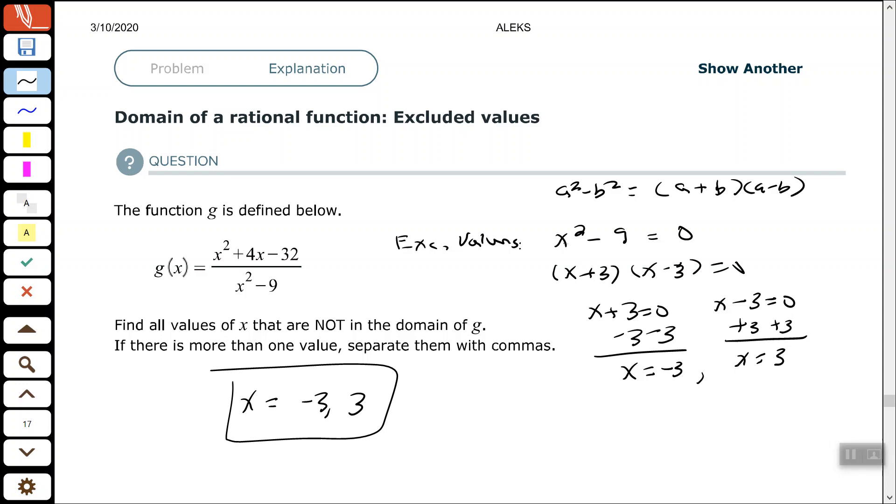So again, we'll look at our denominator, see what makes our denominator equal to zero, because whatever those values are, if we replace X with those values and get zero in our denominator, then as we've seen before, that dividing by zero is undefined. So that's why those are excluded values.